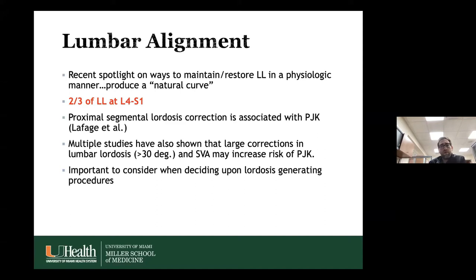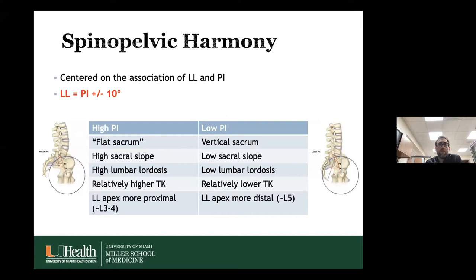We can't talk about lumbar lordosis without spinal-pelvic harmony. This is super high yield — definitely going to be on the boards: lumbar lordosis should equal pelvic incidence plus or minus 10 degrees. A high PI means a more horizontal sacrum with high sacral slope, requiring relatively increased lumbar lordosis to keep the spine balanced and resulting in relatively higher thoracic kyphosis, with the lumbar lordosis apex shifted more proximally.